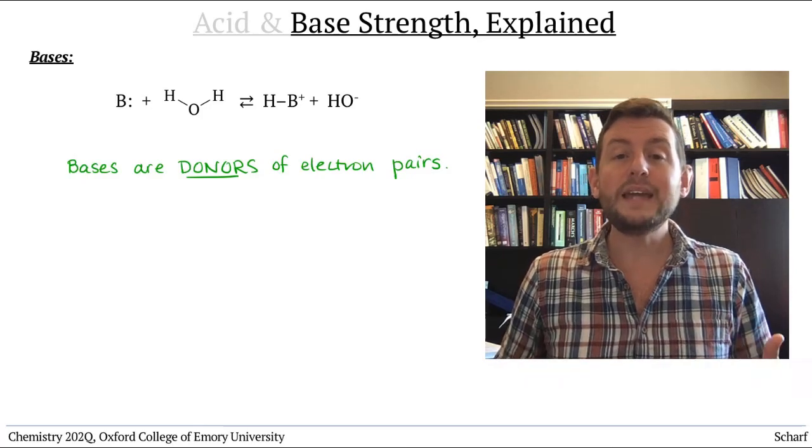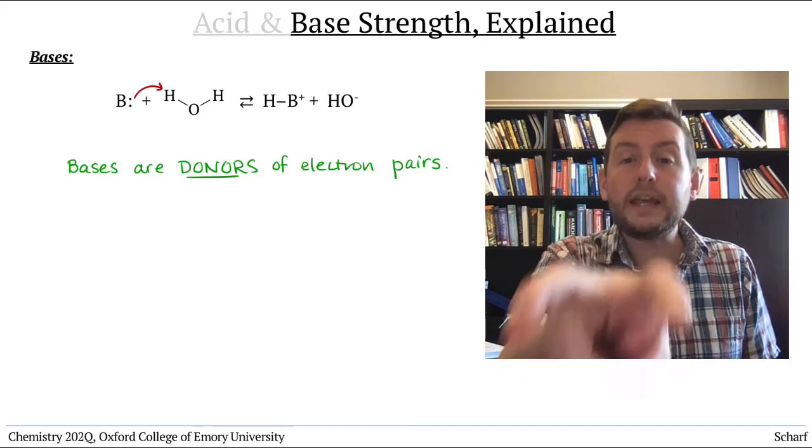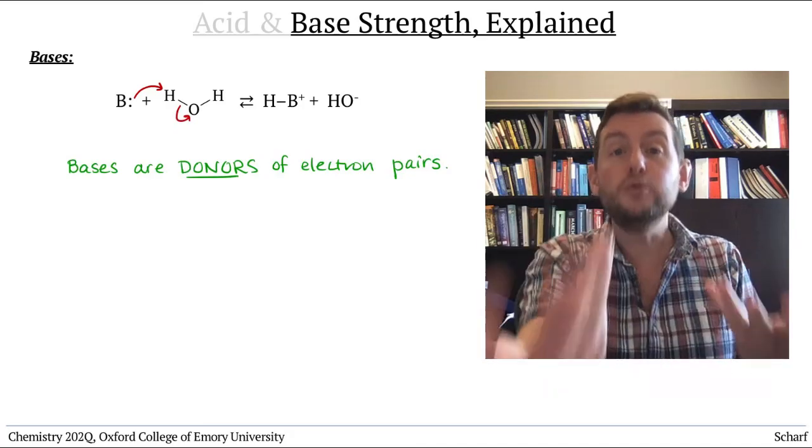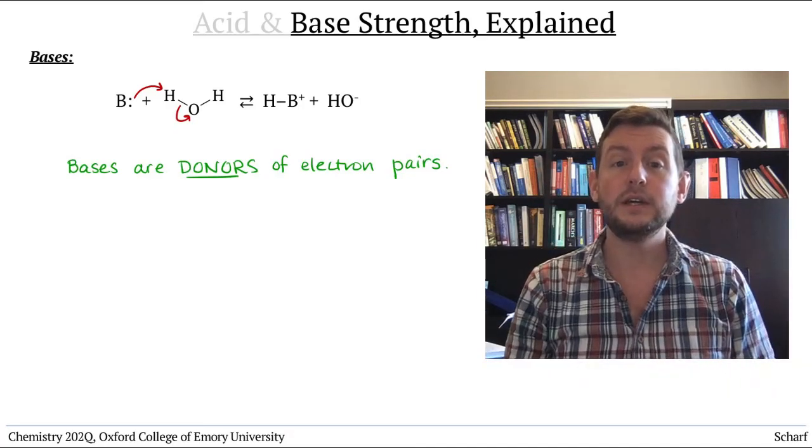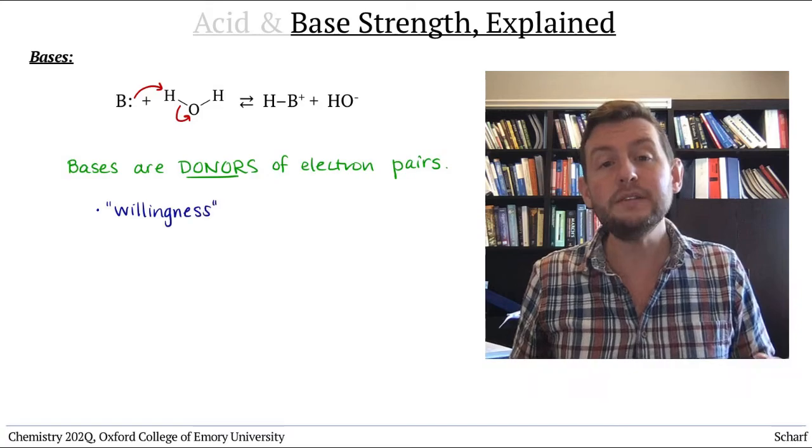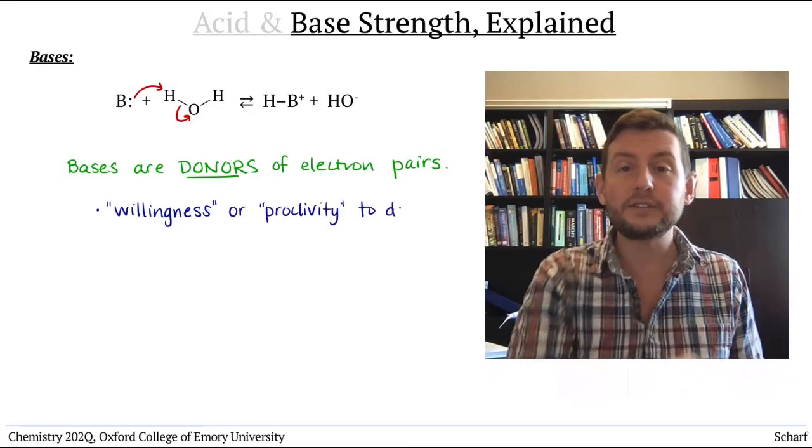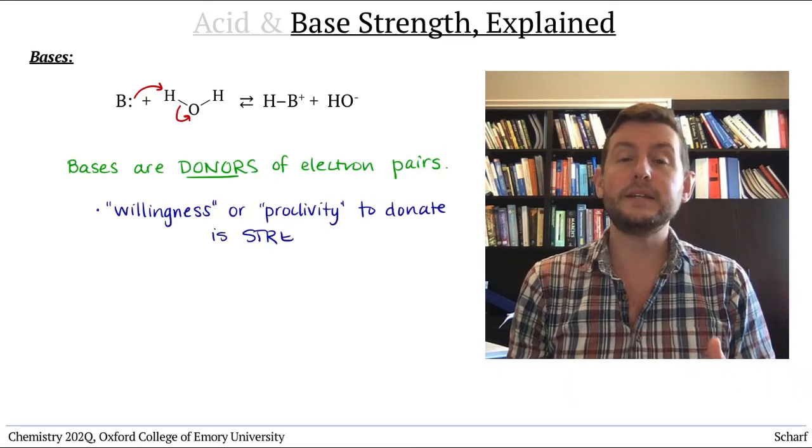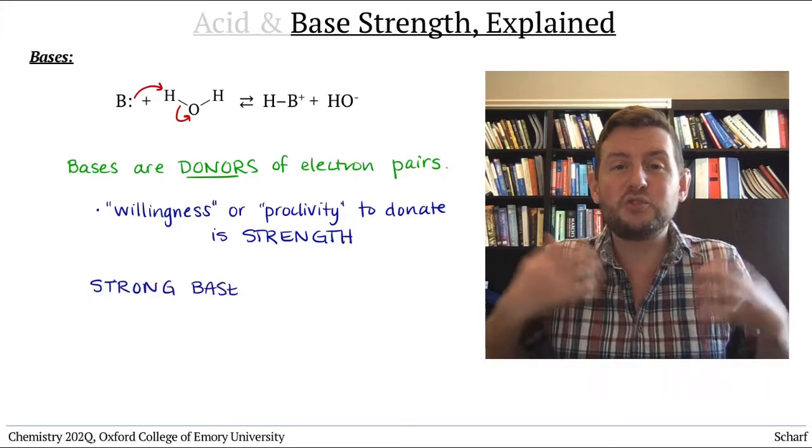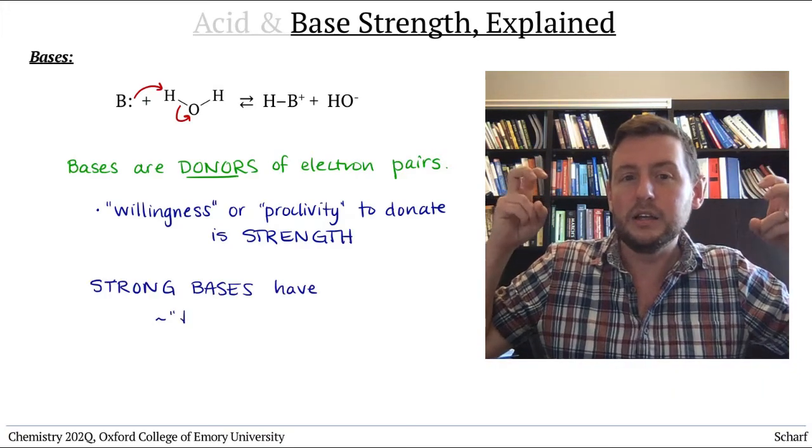When a base reacts, it donates that pair of electrons to some other molecule. Its willingness or proclivity to donate that pair of electrons is what gives a base its strength. The more donatable the pair of electrons, the stronger the base.